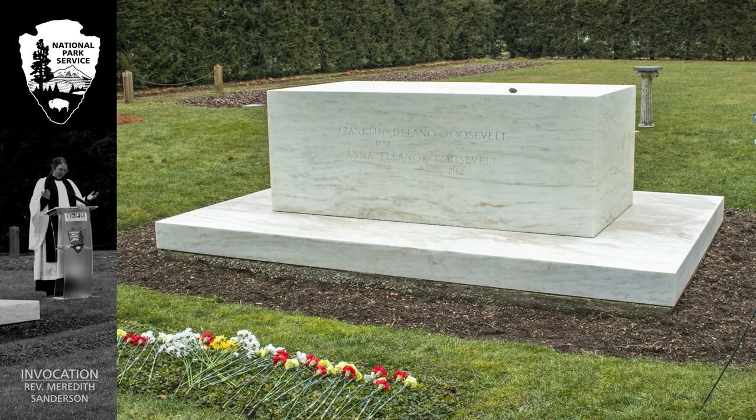A black bar slowly fades onto the left side of the screen, occupying about one-sixth of the screen. A white NPS logo appears at the top of the black bar, and this black space and logo will remain throughout the entire video. A video of a woman behind the podium appears under the NPS logo inside the black bar in black and white, while the right side of the screen remains in color where event photography and videos will be shown.